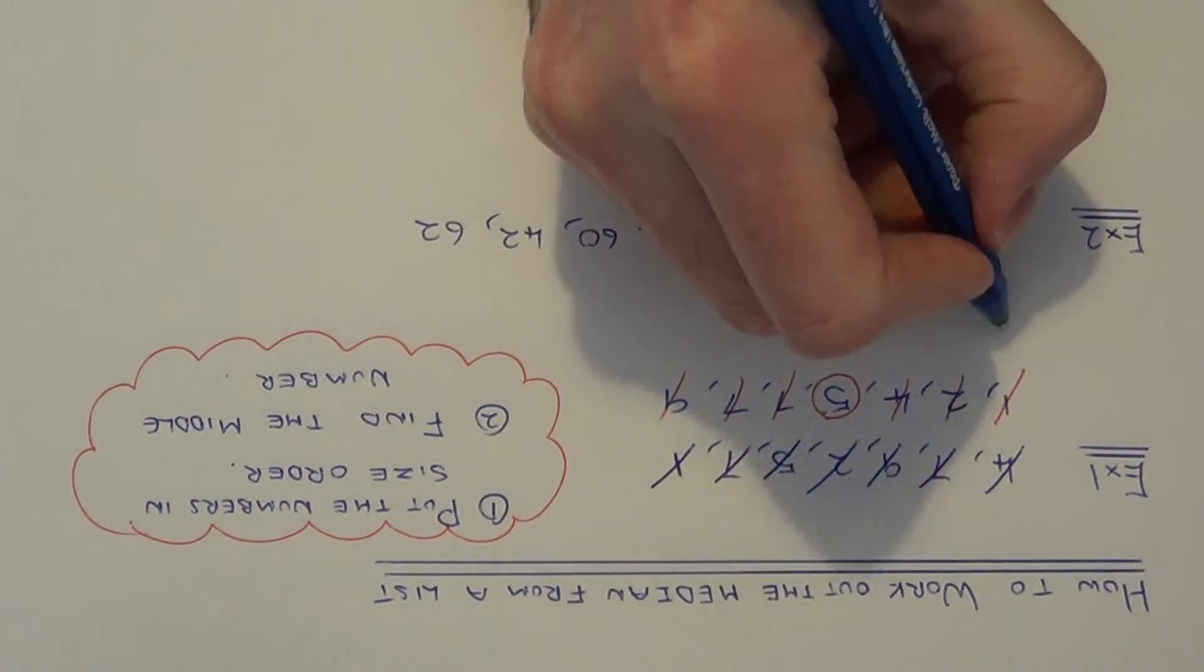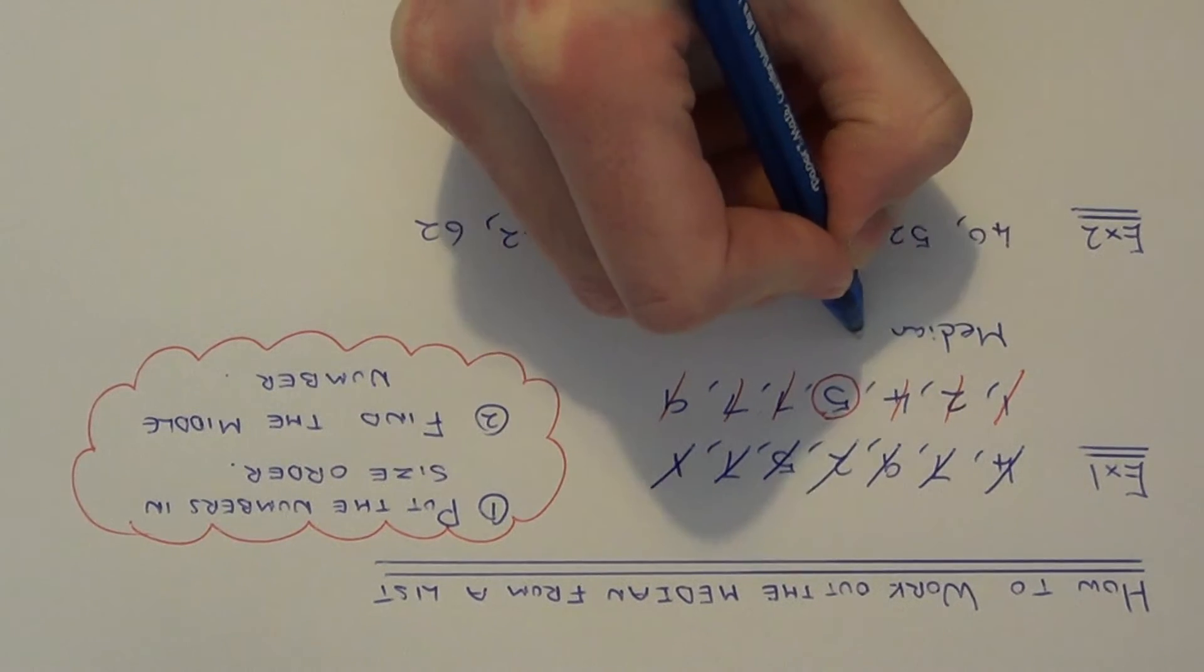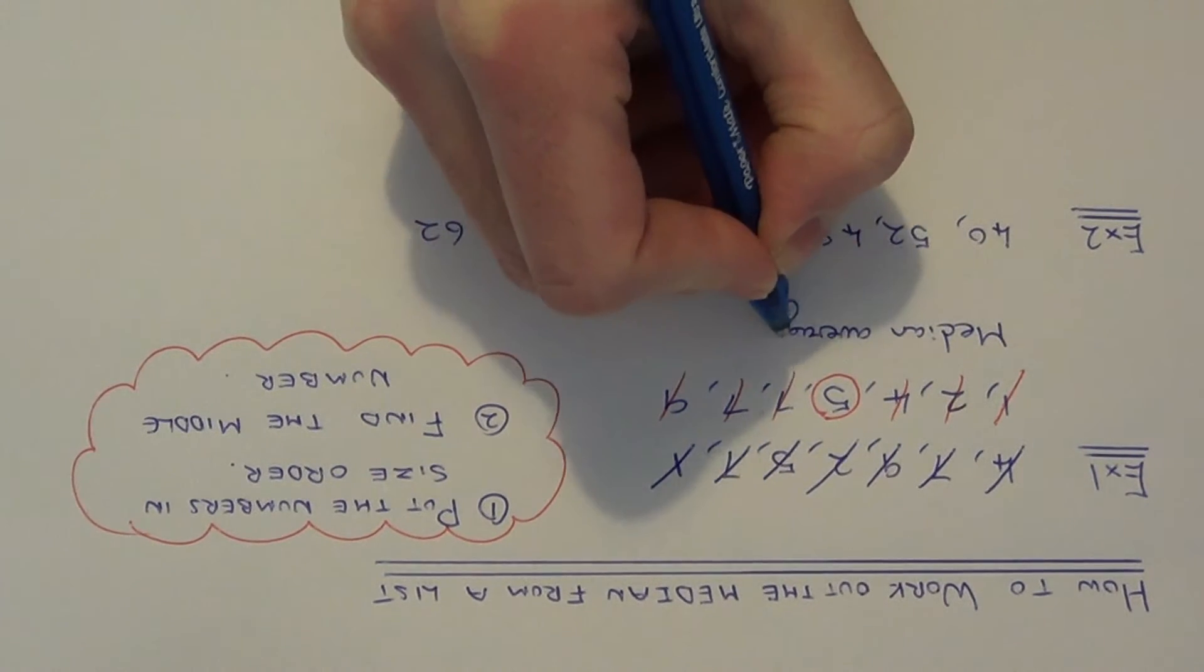Don't just circle it though. You need to actually write that down. So median average equals five.